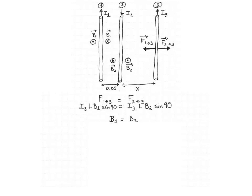We replace B₁ and B₂ with the formula for the magnetic field of an infinite wire. B₁ = μ₀ I₁ / (2π R₁) and B₂ = μ₀ I₂ / (2π R₂). The constants μ₀ and 2π on both sides cancel out. I₁ is 15 Amperes and the distance between wire 1 and the position of wire 3 is 5 cm plus x, so 0.05 + x in meters. The current in wire 2 is 5 Amperes, and the distance between wire 2 and the position of wire 3 is x.